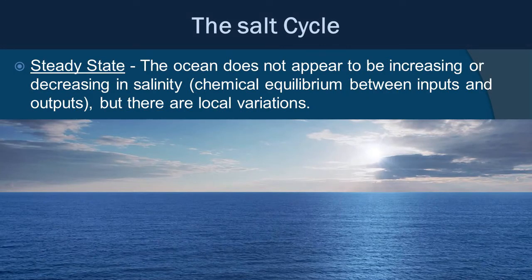The ocean doesn't seem to be getting any saltier — this is the steady state concept. We have a chemical equilibrium between inputs and outputs, but there are local variations: some areas become hypersaline and some become brackish with lower salinity. Overall oceanic salinity seems to be relatively steady. Keep in mind it probably took billions of years to reach that point of steady state.